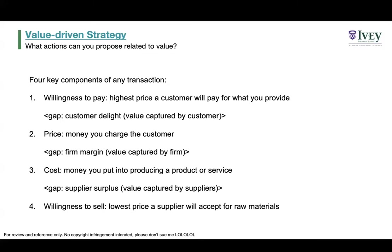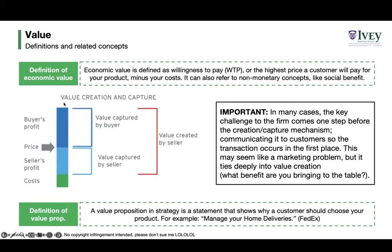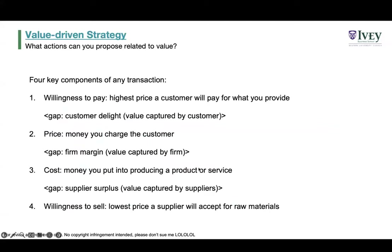Cost is how much you actually pay the supplier for raw materials like the sausage and bun, and willingness to sell is how much the supplier is willing to accept at a minimum. If it only costs the supplier 50 cents for all raw materials but you're paying them $2, then the supplier surplus — value captured by the supplier — is $1.50. Depending on which role you're taking in the transaction, you might want to look at which of these gaps you want to extend.